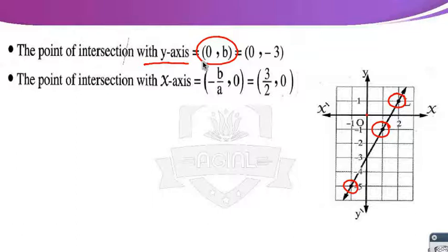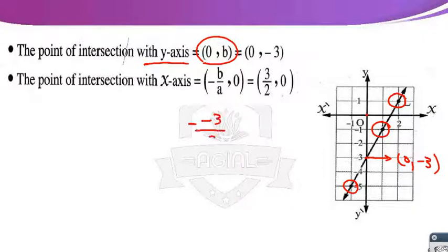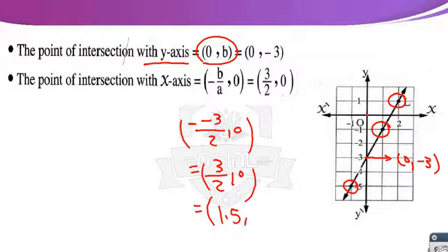Here b equals negative 3, so the line intersects the Y-axis at (0, −3). The intersection with the X-axis is at the point (−b/a, 0). With b equals negative 3 and a equals 2: negative negative 3 over 2 equals 3/2 equals 1.5. So the X-intercept is (1.5, 0) — the midpoint between 1 and 2 on the X-axis. This is the point where the straight line intersects the X-axis.